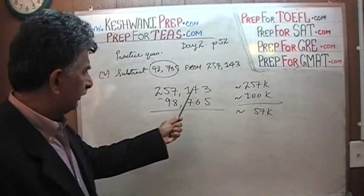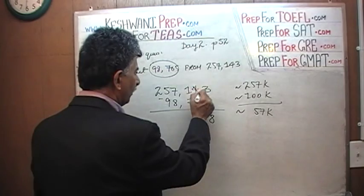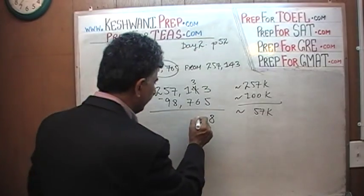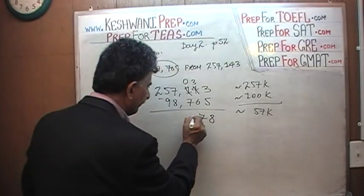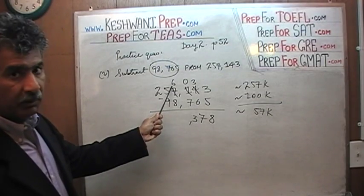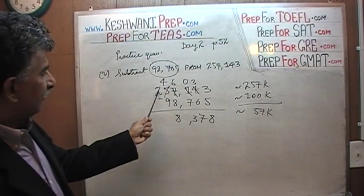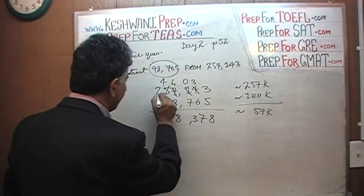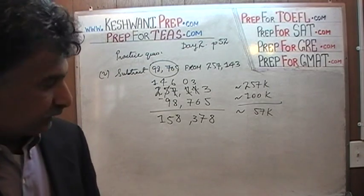Let's do it and keep track. We borrow 1, get 13; 13 minus 5 is 8. That 4 becomes 3. We borrow again: 12 minus 6 is 6, so it's 7. This became 0 because we borrowed 1. Borrow again: 10 minus 7 is 3. This becomes 6. We have to borrow 1 again to subtract 8: 16 minus 8 is 8. Borrow once more: 14 minus 9 is 5, and this became 1. The result is 157,378.